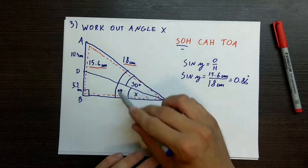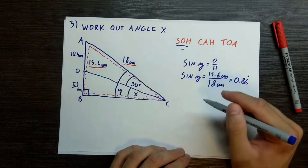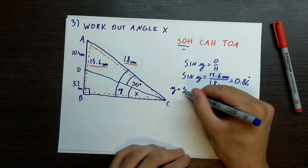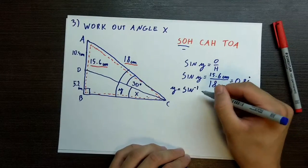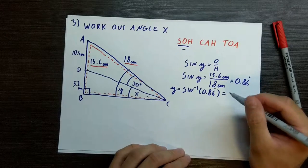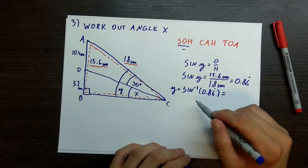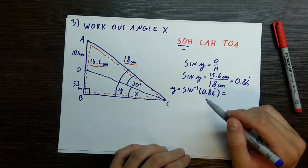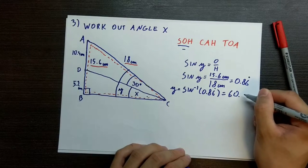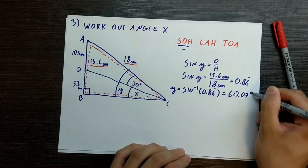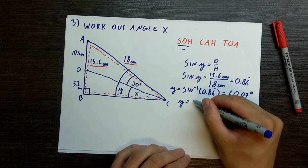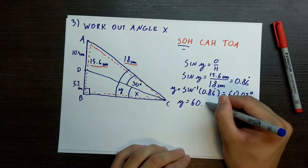So sine y is equal to opposite over hypotenuse. Sine of y is equal to 15.6 cm divided by 18 cm, which is equal to 0.86 recurring. Now, in order to find angle y, we use the inverse formula. So y is equal to inverse sine of 0.86 recurring. You can use shift on a calculator to access the inverse formulas. If we put that in the calculator, we would get an answer of 60.07 degrees.